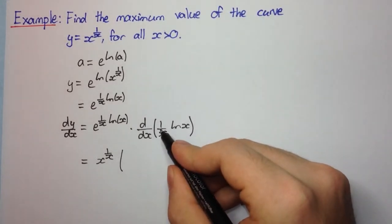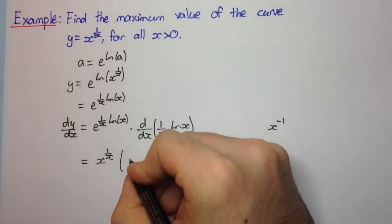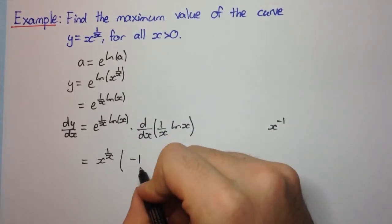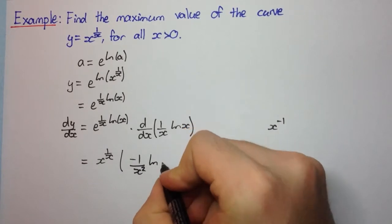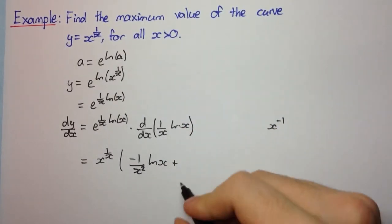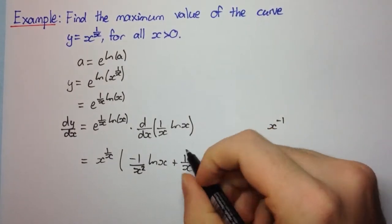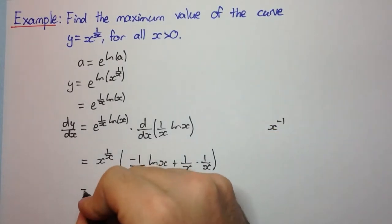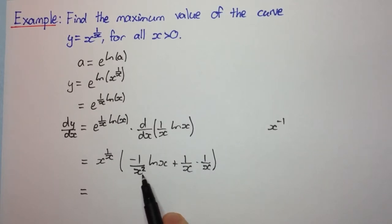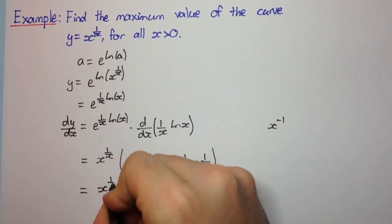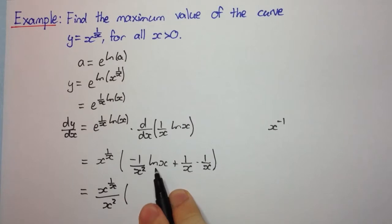We can either do a quotient or a product rule — I'm going to do a product rule because it's probably just easier to see. So we're going to have the derivative of the first one: the derivative of 1 over x, or x to the negative 1, brings down the minus 1, giving x to the negative 2, so divided by x squared, times log x. Plus 1 over x times the derivative of log x, which is 1 over x. You'll see that this gives 1 over x squared as a common factor, so we pull that out, and we get 1 minus log x inside the brackets.